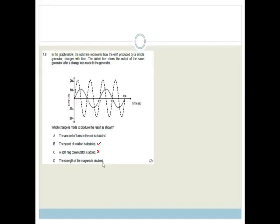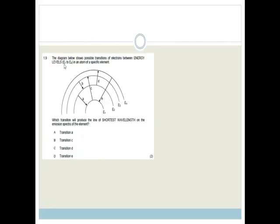It could be that the speed of the rotation was doubled, because that would definitely increase the rate. The split-ring commutator is added. That's got nothing to do with it. The strength of the magnets doubled. That again is not going to change the wavelength. The amount of turns in the coil is doubled. I would say that that is your correct answer. Because by increasing the number of turns, not only are you increasing the voltage, but you're increasing the rate at which the flux is changing. So the correct answer here is A.